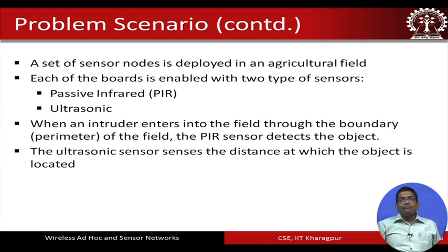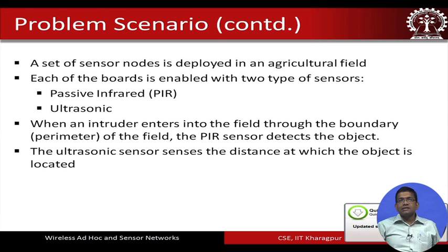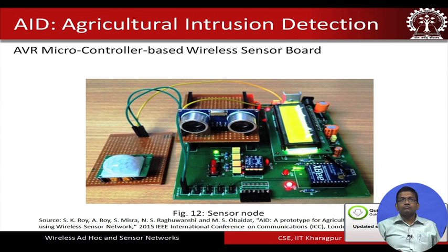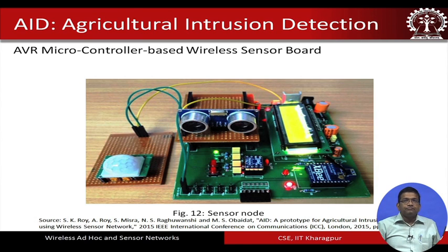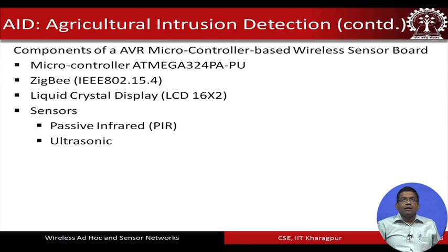Each sensor node in the agricultural field is enabled with two types of sensors: a passive infrared (PIR) sensor and an ultrasonic sensor. When an intruder enters the field through the boundary, the PIR sensor detects the object, and the ultrasonic sensor then senses the distance at which the object is located. These are the two types of sensors — PIR and ultrasonic — used in each node.